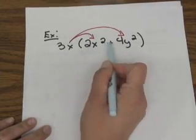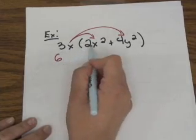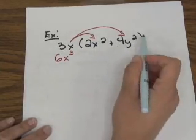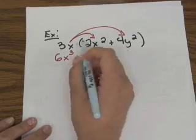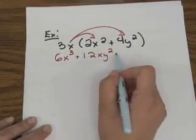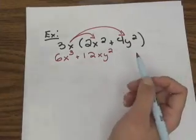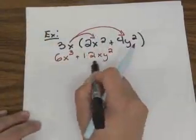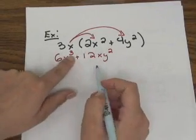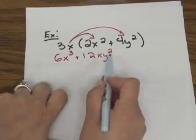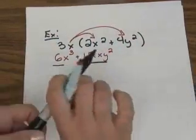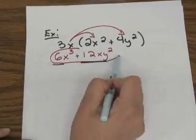Multiplying 3x and 2x squared: 3 times 2 gives us 6, and x times x squared gives us x cubed. Next, we multiply 3x by 4y squared: 3 times 4 gives a positive 12, and x times y squared gives xy squared. Whenever you multiply polynomials, check for like terms afterwards. Here, 6x cubed and 12xy squared — this x has a cubed exponent and this x doesn't, and this term has y squared while the other doesn't — so these are not like terms and cannot be combined. This is the final simplified answer.